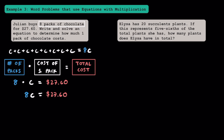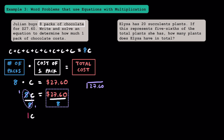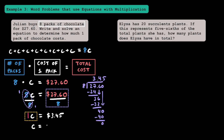Since we want the cost of just one chocolate pack, we're going to use the division property of equality and divide both sides by 8. On the left, 8 over 8 cancels out to make 1, so we have 1C. On the right, dividing $27.60 by 8 gives us $3.45. Therefore, using the identity property of multiplication, C equals $3.45 — one pack of chocolate costs $3.45.